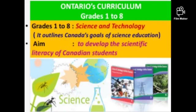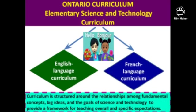Ontario's curriculum for grades one to eight in science and technology outlines Canada's goals for science education, aiming to develop the scientific literacy of Canadian students. The curriculum is offered in two languages — English and French — and both are developed, implemented, and revised in parallel. The curriculum is structured around relationships among fundamental concepts, big ideas, and the goals of science and technology to provide a framework for teaching overall and specific expectations.